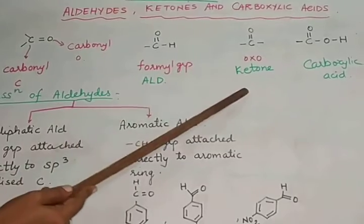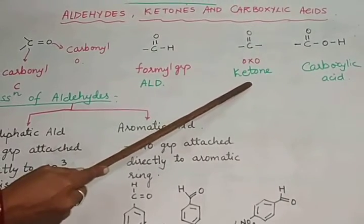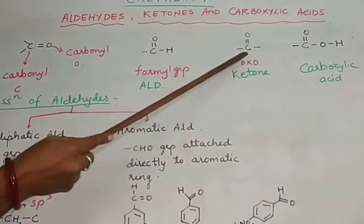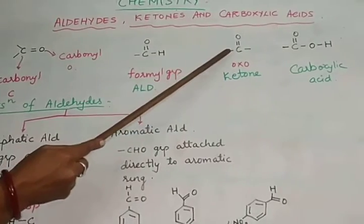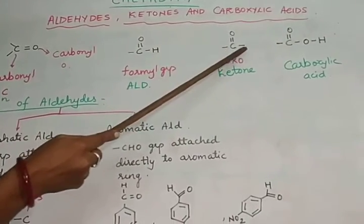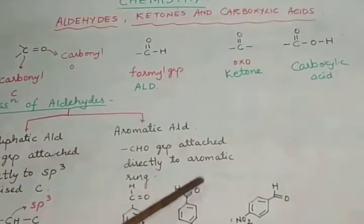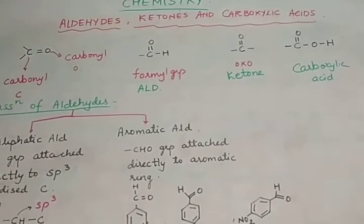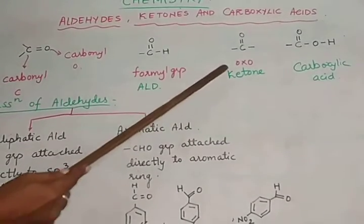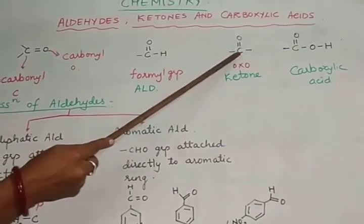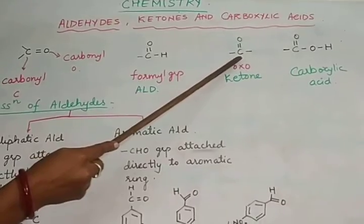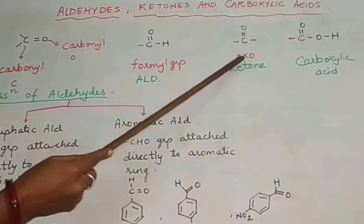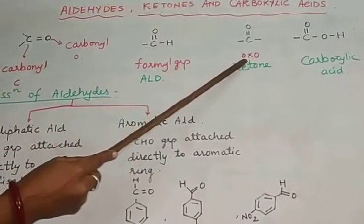The next carbonyl compound is a ketone. A ketone contains C=O with R groups on both sides of the carbonyl carbon. The C=O group in a ketone is also called the oxo group.